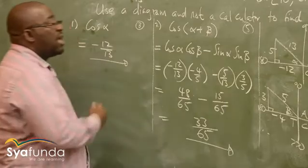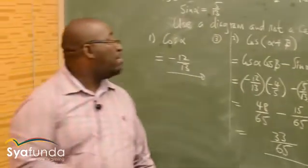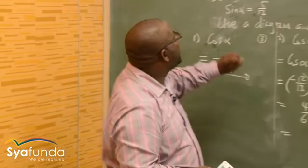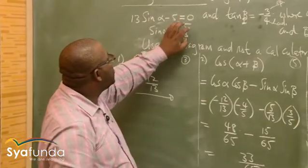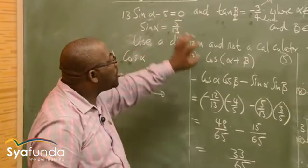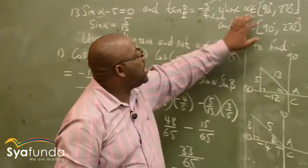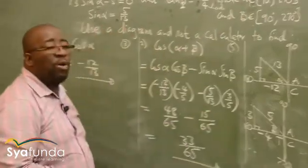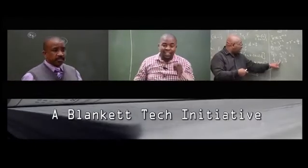This is what you do when you are using a diagram — make sure that you put it on the correct quadrant. This will help you, because sine is positive there. Use this in conjunction with the interval to know exactly where to do your diagram. Thank you.